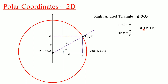Also, theta varies over the full circle, so theta varies from 0 to 2π. The limits of theta are from 0 to 2π. We thus have the two relations: cos theta equals x over R, and sin theta equals Y over R.